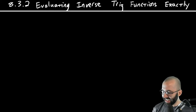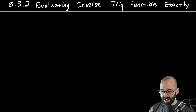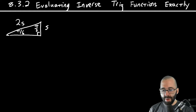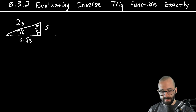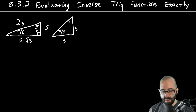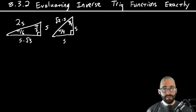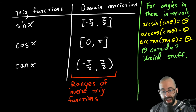We're going to use the special triangles here. One of the special triangles was the pi/6–pi/3 right triangle, where the hypotenuse is always double the short side, and the long side is the short side times the square root of 3. We also had the 45-45-90 triangle, or pi/4 triangle, where the hypotenuse is square root of 2 times s. These special triangles are going to be really useful for evaluating inverse trig functions.